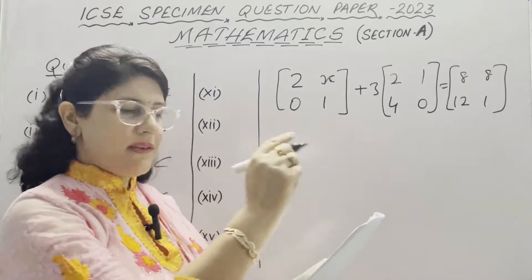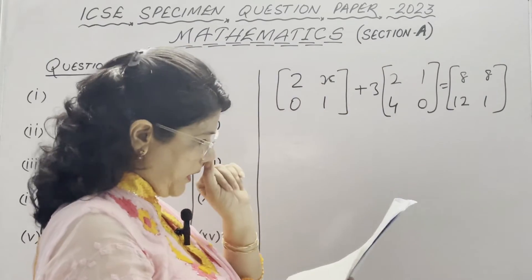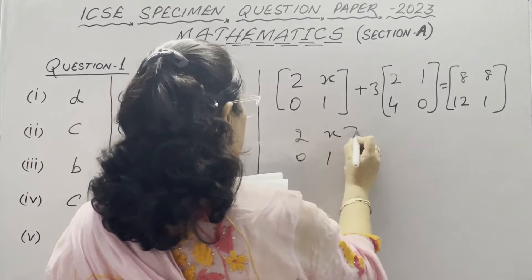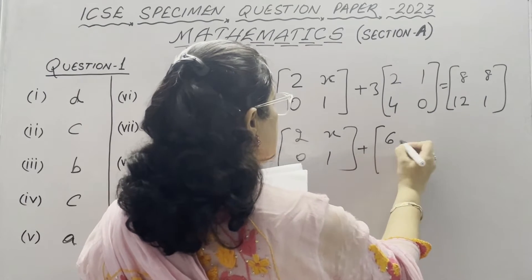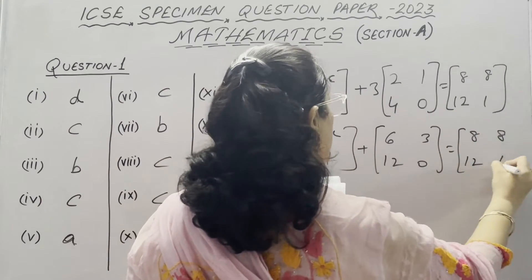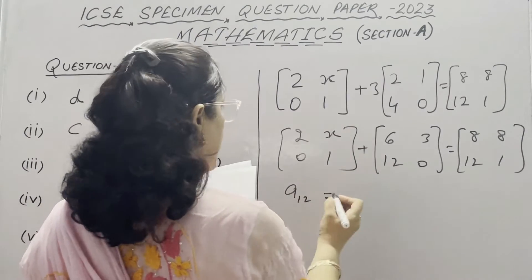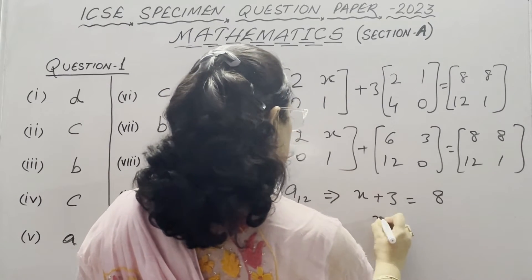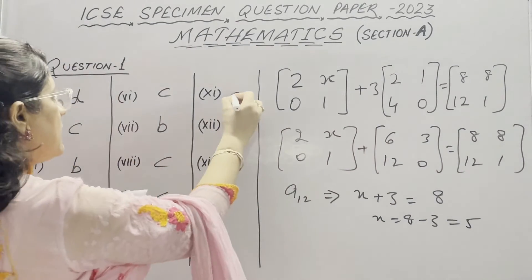In Part 11, three matrices are given where the sum of the first and second matrix equals the third matrix multiplied by 3. The second matrix is multiplied by 3, so 3 is multiplied with all its elements giving 6, 3, 12 and 0. To find x, we look at the element at position a(1,2): x plus 3 equals 8, so x equals 8 minus 3, meaning x equals 5. The correct option is B.